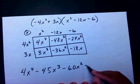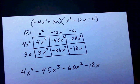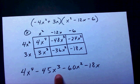Now I combine like terms. This is the only x to the fourth, so I write 4x to the fourth. Negative 48x cubed and positive 3x cubed gives negative 45x cubed. Negative 24x squared and negative 36x squared gives negative 60x squared. And minus 18x. My exponents are in descending order, so this is standard form — my final answer.